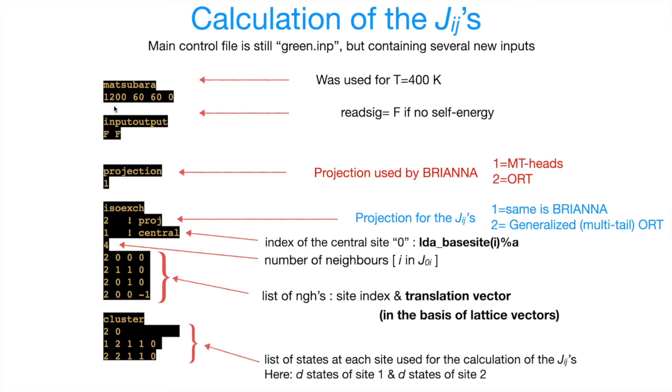Input output block is set to false if you don't have any self-energy. Otherwise, the first flag has to be changed to true. And now we come to the most important block, which is called ISOEXCH. So first, we define the projection, which will define the way we will construct the states representing site I and site J.